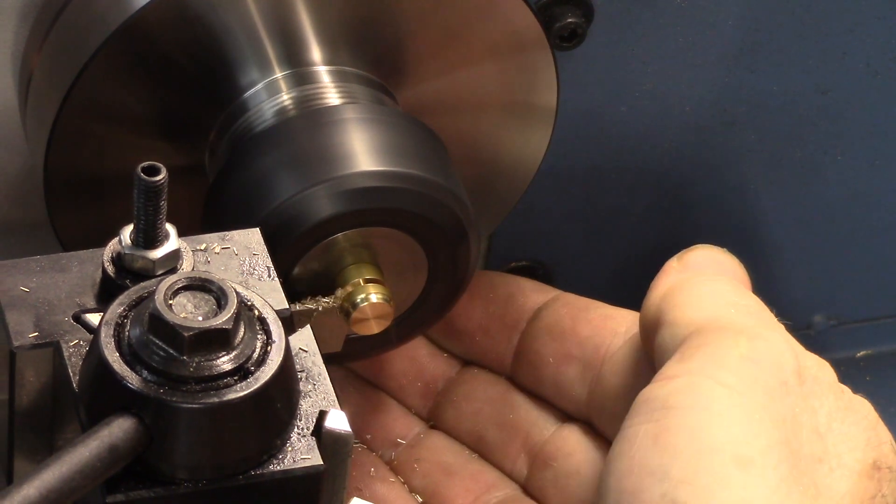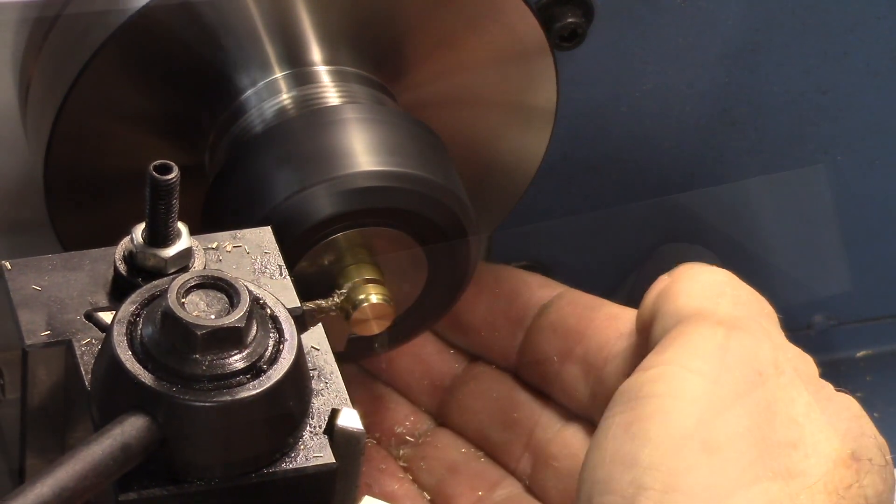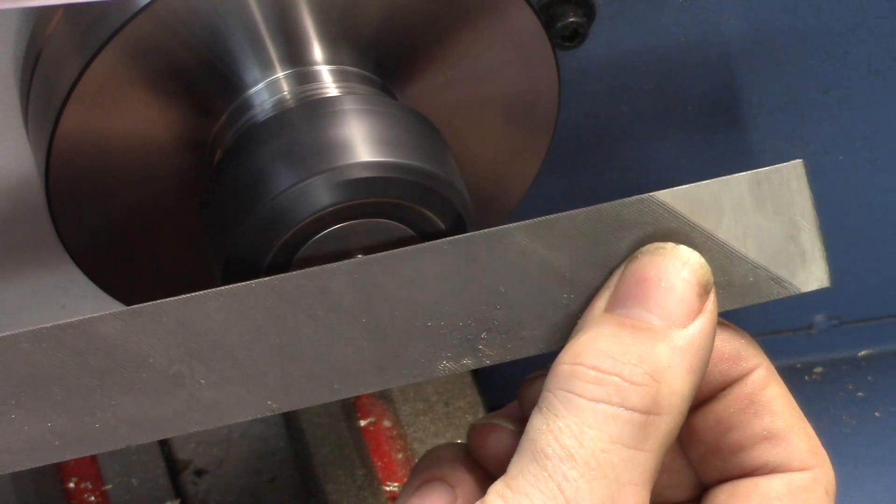The cylinder cap is parted off and reversed in the collet. A lathe file was used around the back of the cylinder cap.